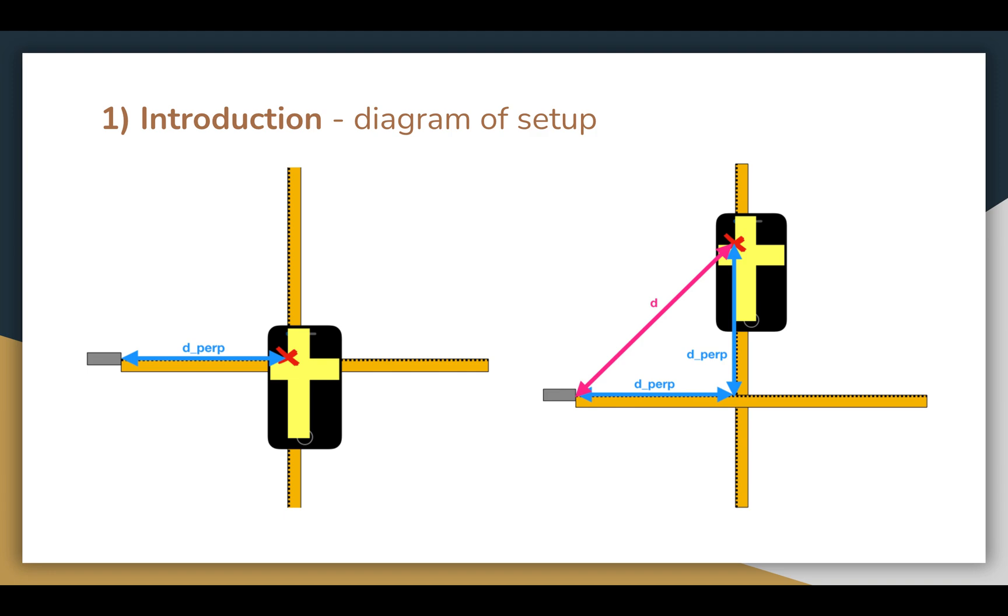On the right, we found the perpendicular distance needed for the magnitude of the magnetic field to be 100 microteslas, and then calculated the net magnetic field at the location shown in the diagram, which will later be compared to the results from the computational model.